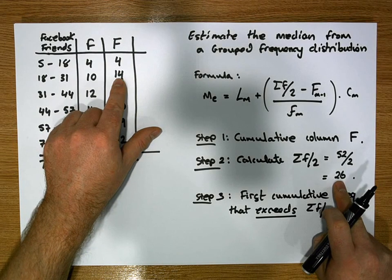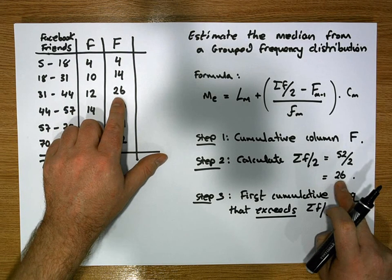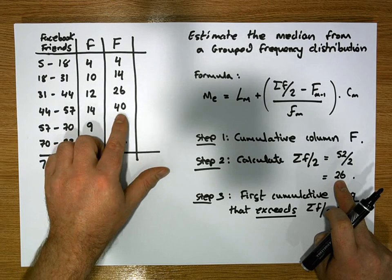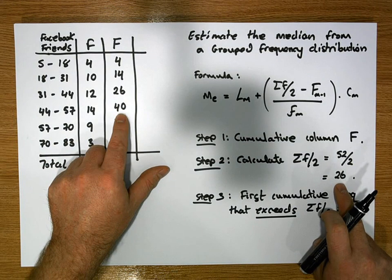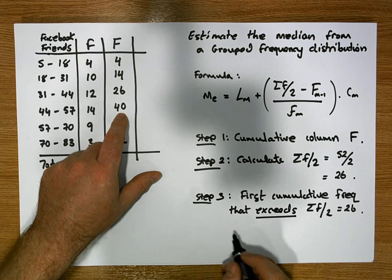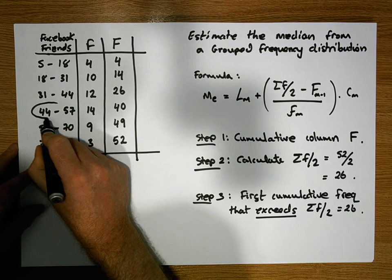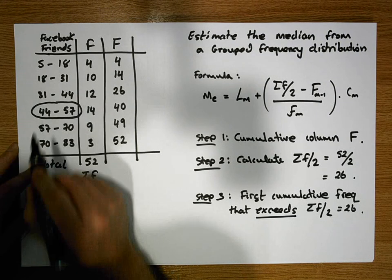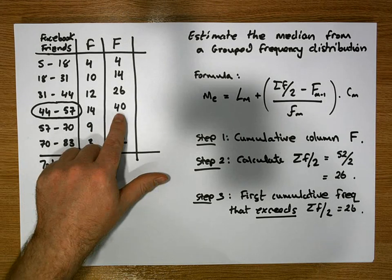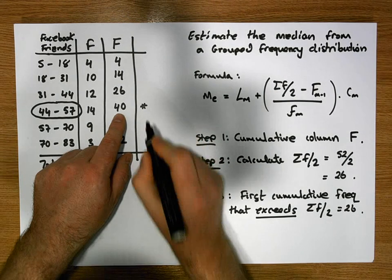So 4 is not greater than 26, 14 is not greater than 26, 26 is not greater than 26, but 40 is greater than 26. So what we now know is that the median class is 44 to 57. This is the first value here that exceeds.